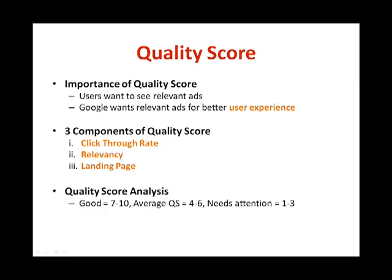Google rewards you for having a high quality score because relevancy is the key in PPC. Users want to see relevant ads, so advertisers should present relevant ads. There are three components to a quality score: click-through rate, relevancy, and landing page. Click-through rate is the biggest component — it is determined by how many people click on your ad over how many times your ad is shown. This feedback from millions of users allows Google to determine which ad is the most relevant for serving.